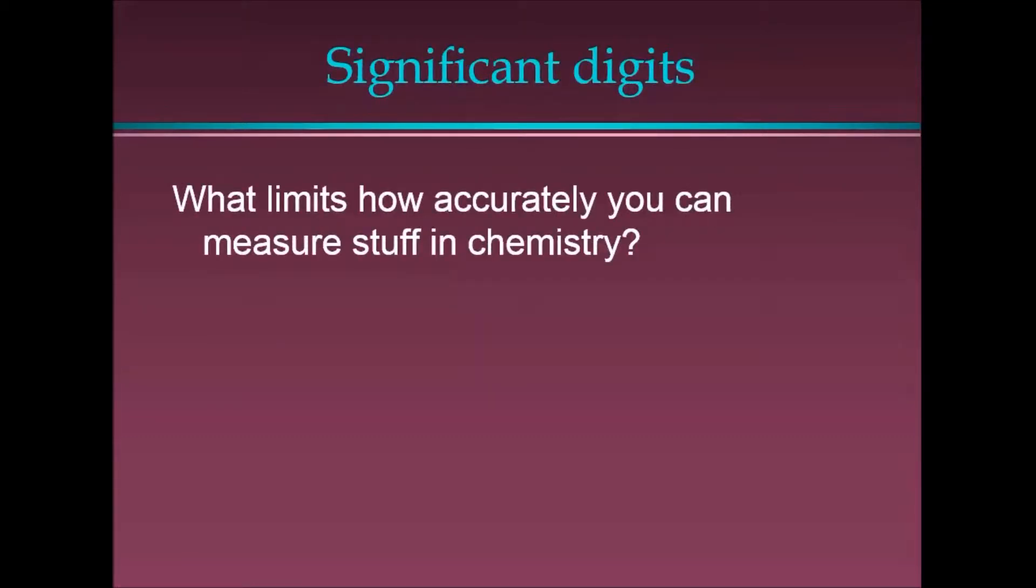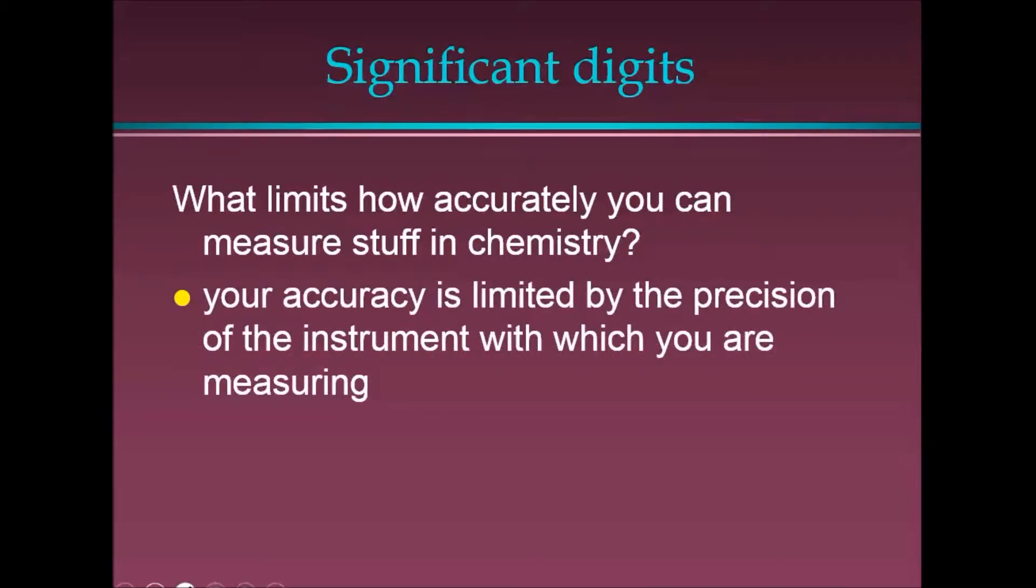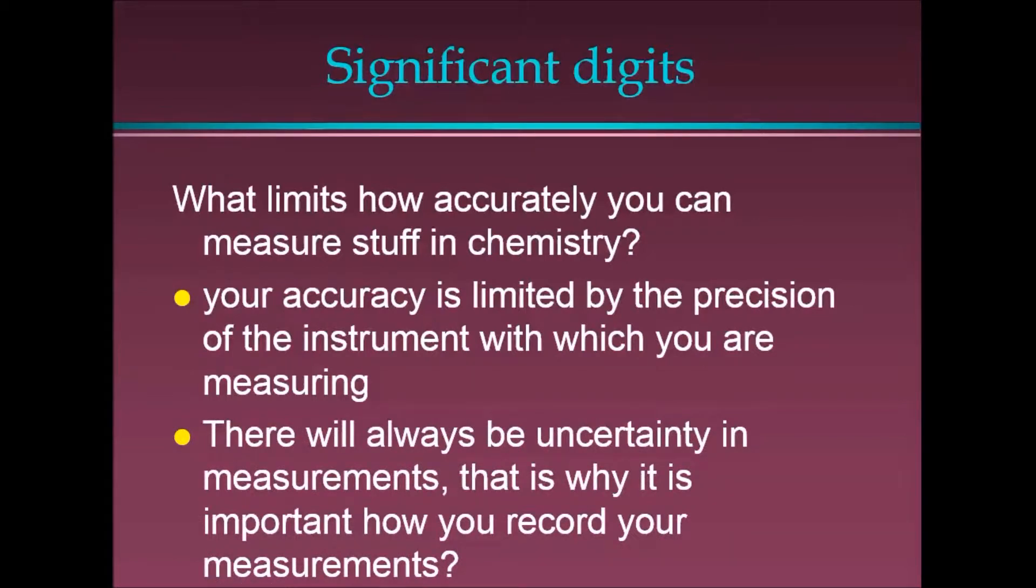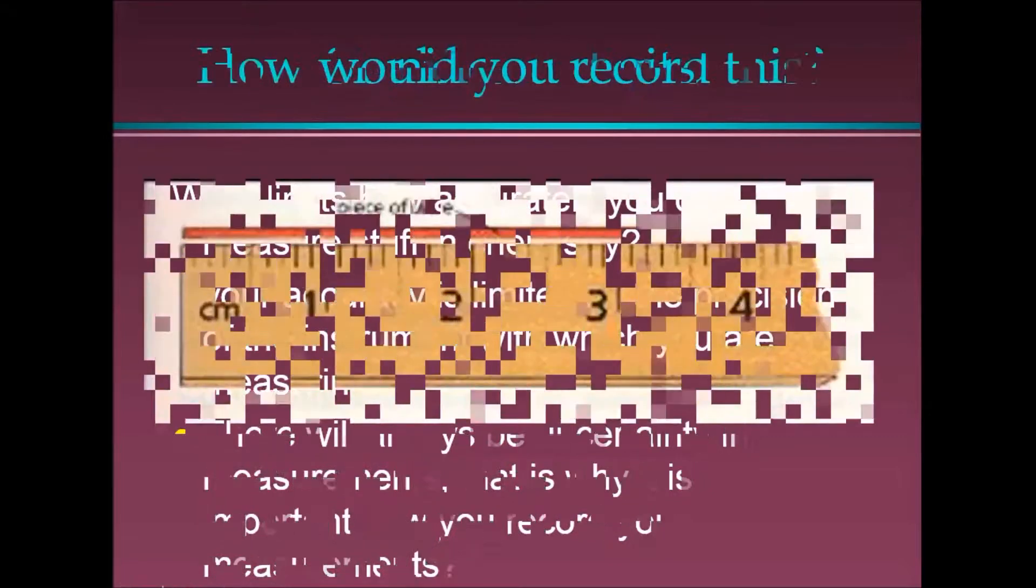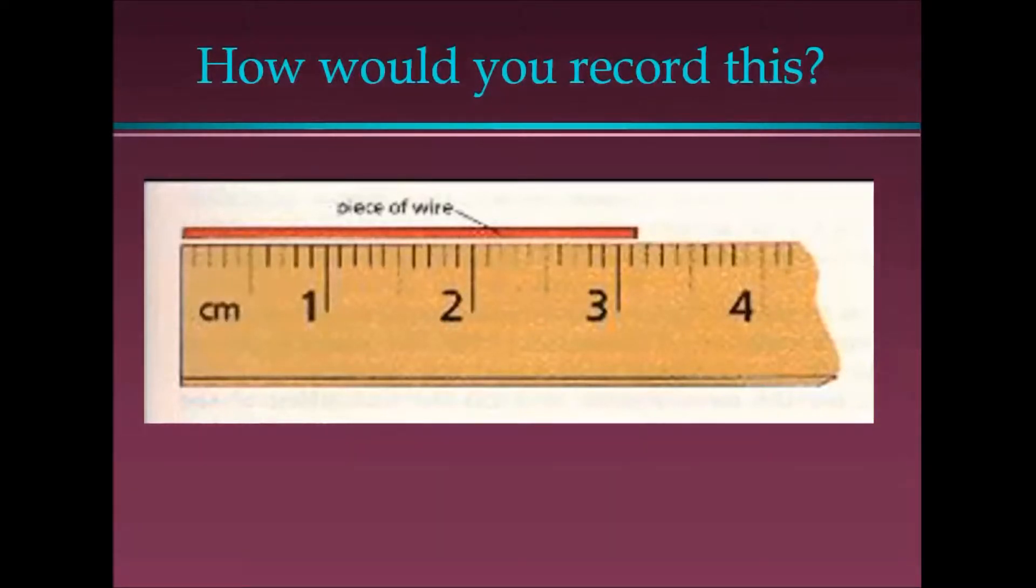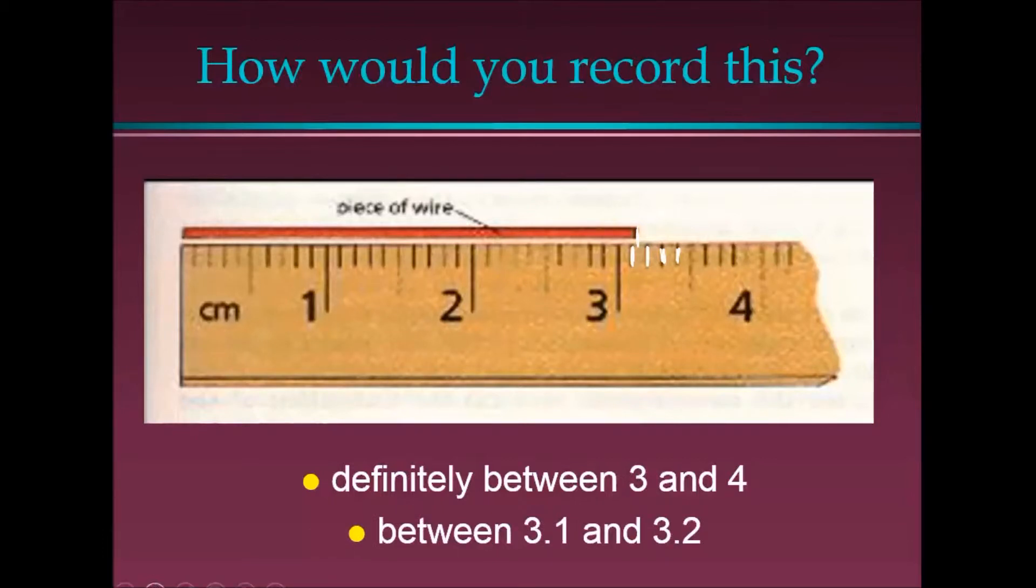What limits how accurately you can measure the stuff in chemistry? Well, it's the accuracy and the precision of your instrument. There will always be a certain amount of uncertainty. The instrument can only go so far. How we record this is very important. For example, look at this ruler. Definitely, we would have to say that this wire is at least three centimeters. Well, are there increments within the ones place? Yes, we can see the increments. One, two, three, four. And it looks like this wire is just beyond that one place. So it's definitely 3.1.